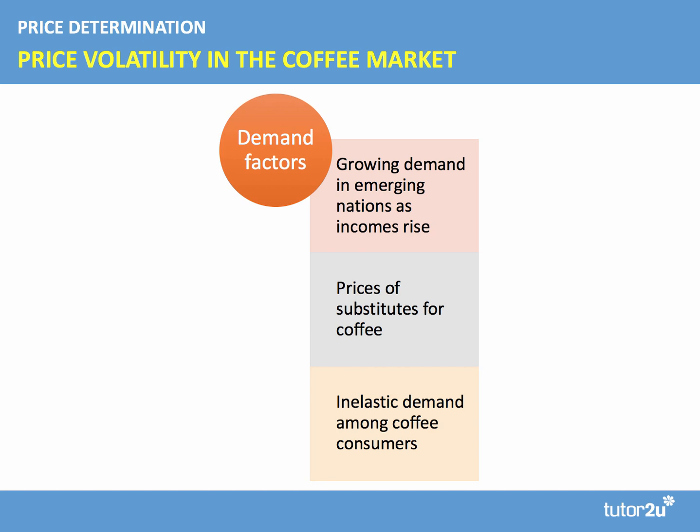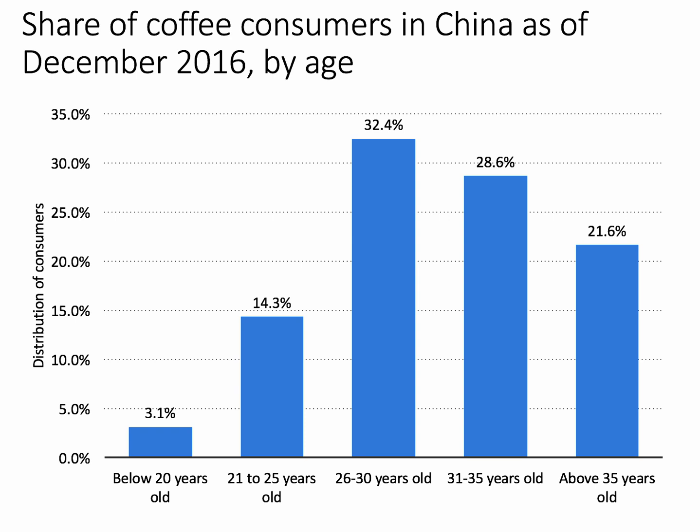Once consumers develop a taste for a product — especially with strong brand loyalty — demand for coffee tends to become more inelastic. A chart shows the share of coffee consumers in China by age: nearly a third are aged between 26 and 30, and the next highest group is 31 to 35. Well over half of coffee consumers in China are aged between 26 and 35 — the group whose per capita incomes are rising most quickly, which drives demand higher.